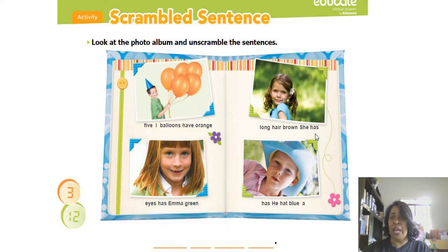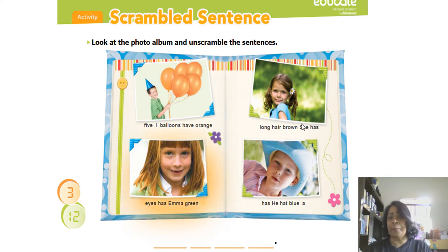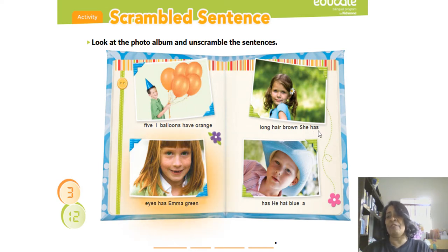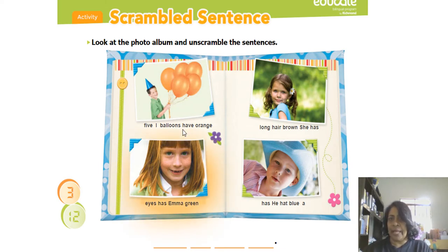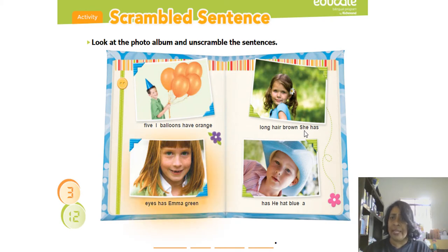Long hair brown she has. 'Long cabelo castanho' — brown, marrom, castanho. Ela tem. Então, veja bem: have e has. Na terceira pessoa do singular em inglês — he, she, it — o verbo 'have' vai sofrer uma alteração. Ele vai ser 'has', não 'have'. À medida que nós formos caminhando com os exercícios, eu vou lembrando vocês disso.